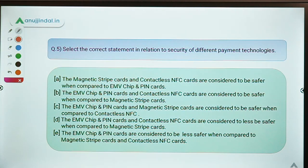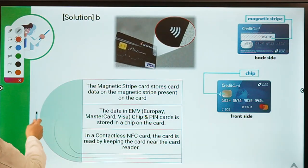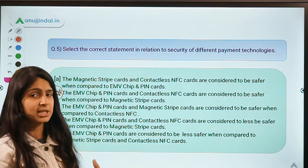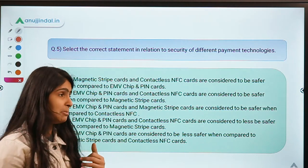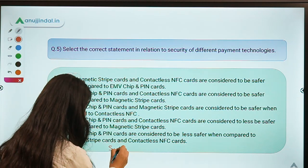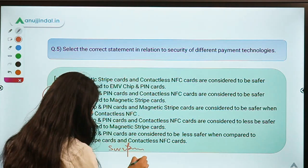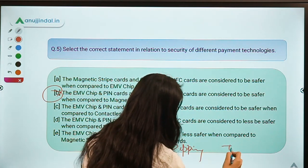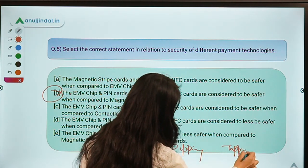The last question says: select the correct statement in relation to security of different payment technologies. The correct option is option B — EMV chip and PIN cards and contactless NFC cards are considered safer when compared to magnetic stripe cards. There are different types of technology associated with different payment methods — swiping, dipping, and tapping.